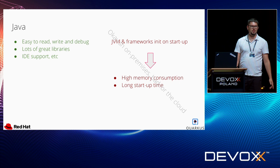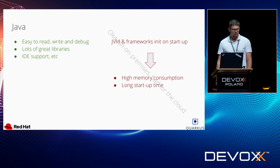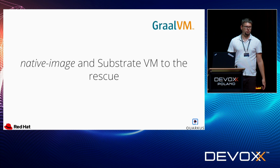This sums up to high memory consumption of Java applications and also usually long startup times. While that's okay in on-premises solutions, it's not so much in the cloud. In the cloud, memory is quite expensive, and also the cloud lets you scale out your applications easily, but if your application starts slow, you cannot take full advantage of that. So Quarkus tries to address these shortcomings, and it does it with GraalVM.